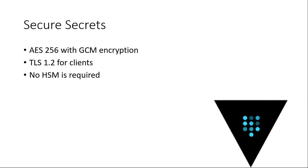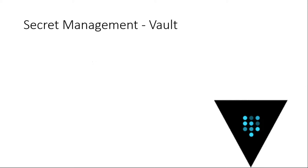What does HashiCorp Vault provide? It actually provides AES-256 encryption — the most modern encryption we have. It uses GCM encryption and TLS 1.2. It does not require an HSM — a Hardware Security Module — which is basically a pizza box that does encryption and decryption very well and very fast. So Vault's secrets don't need that box, making it hard to hack. An episode of Mr. Robot actually did use an HSM — those of us in security know about it.